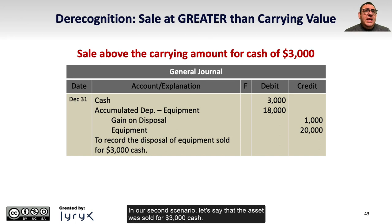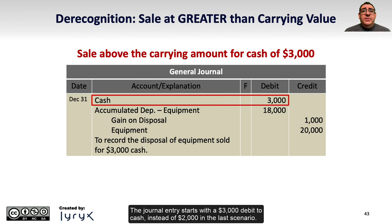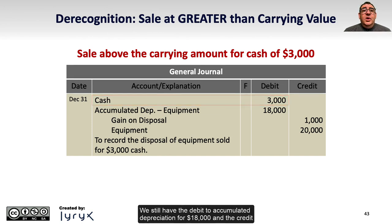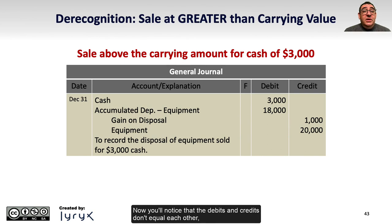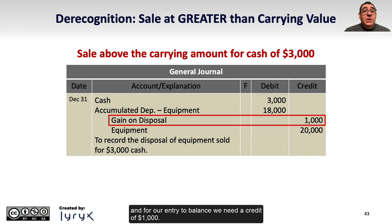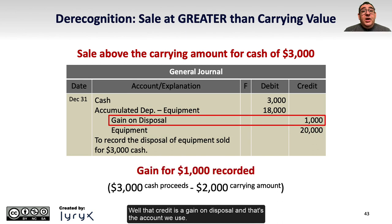In our second scenario, let's say that the asset was sold for $3,000 cash. The journal entry starts with a $3,000 debit to cash. We still have the debit to accumulated depreciation for $18,000 and the credit to the equipment account for the original $20,000 cost to remove the asset. Now the debits and credits don't equal each other, and for our entry to balance, we need a credit of $1,000. That credit is a gain on disposal, and that's the account we use. This is considered an addition to income like revenue, so that's why it's a credit.